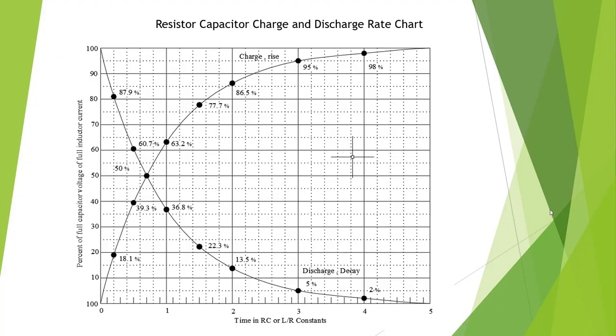Here is the resistor capacitor charge and discharge chart. What we go by here is RC, one time constant. Time constant would be resistance times capacitance. The charge increases by 63.2% each time constant. So the first time constant we're going to go from 0 to 63.2% charged. And every time constant after that we're going to go up by another 63.2% of the remaining.